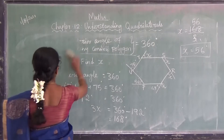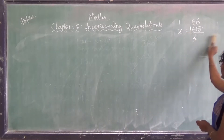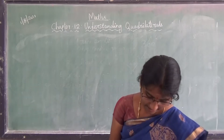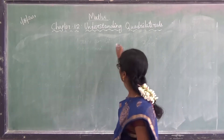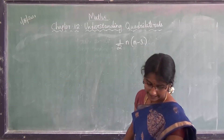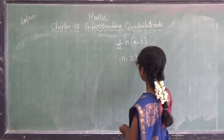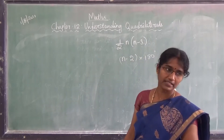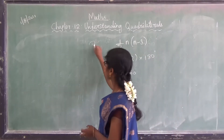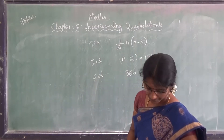So the three formulas we saw: for diagonals the formula is ½ × n × (n − 3); for sum of interior angles it is (n − 2) × 180°; and the sum of exterior angles of any convex polygon is 360°.